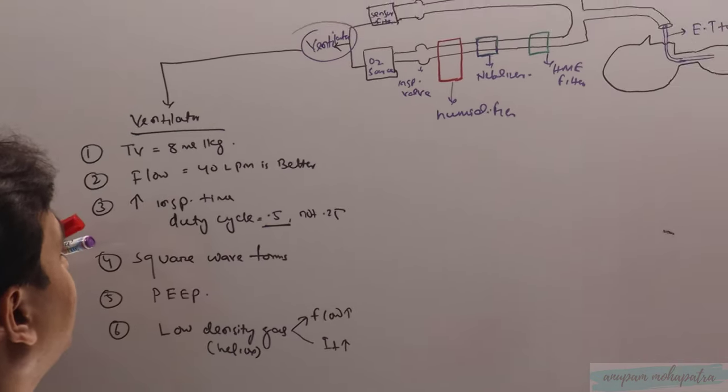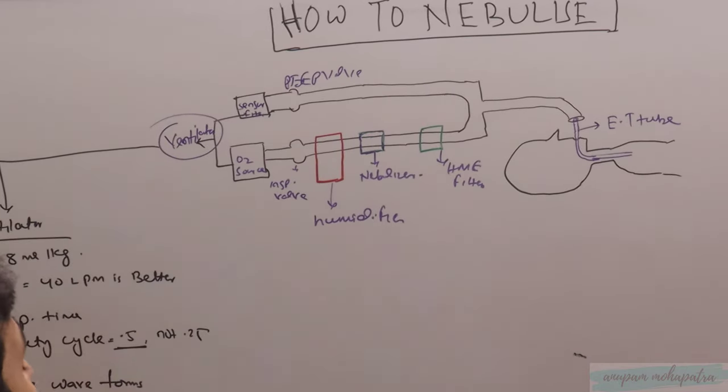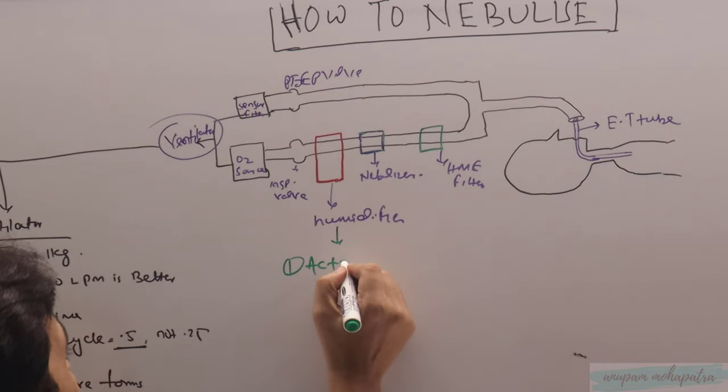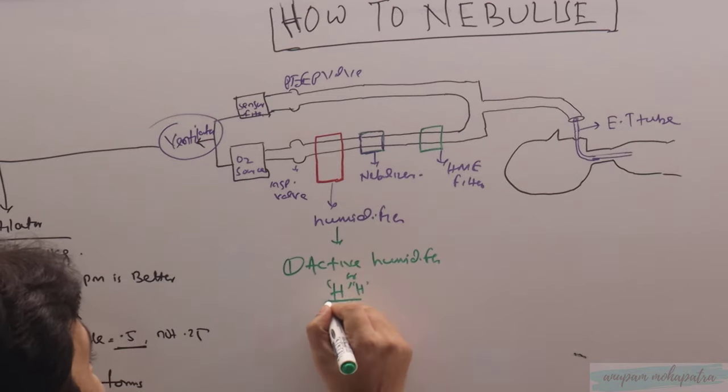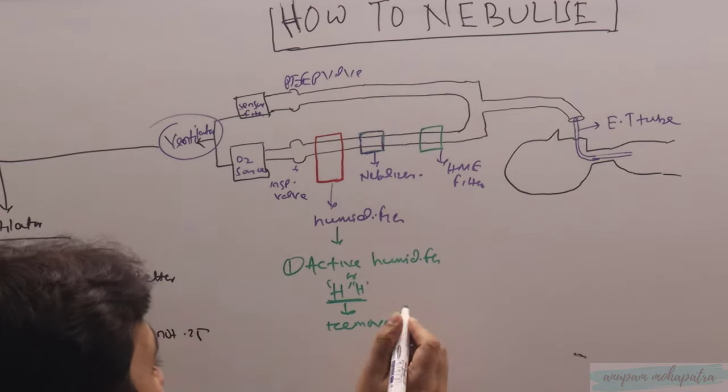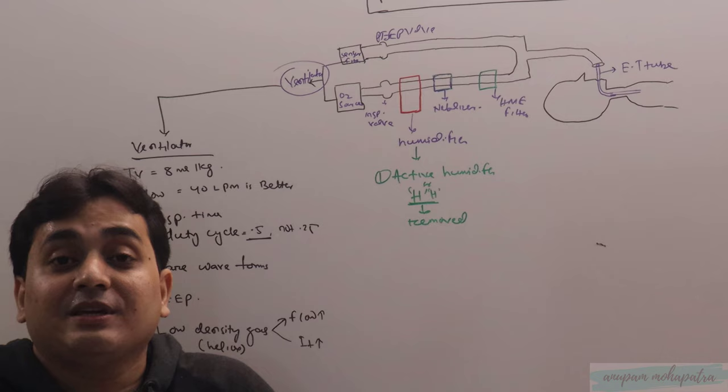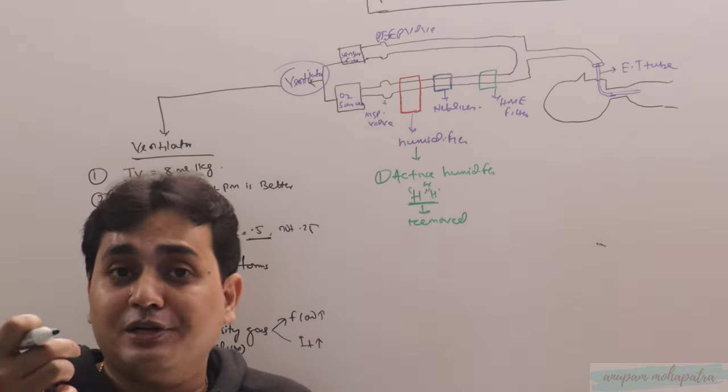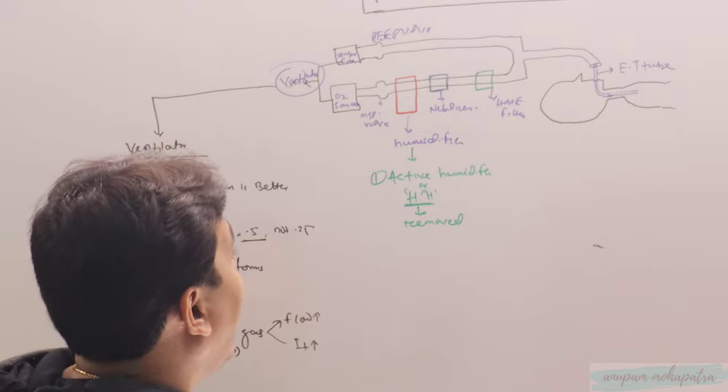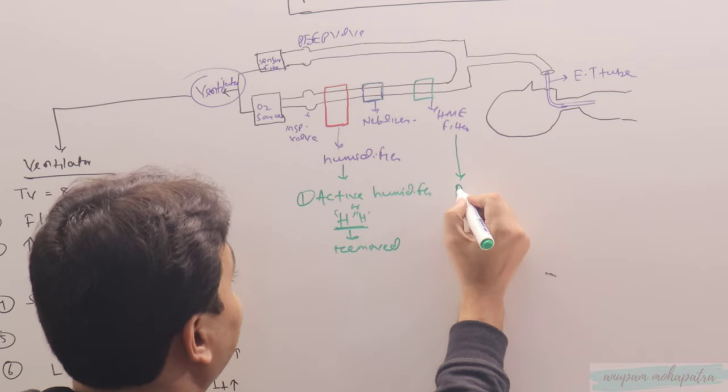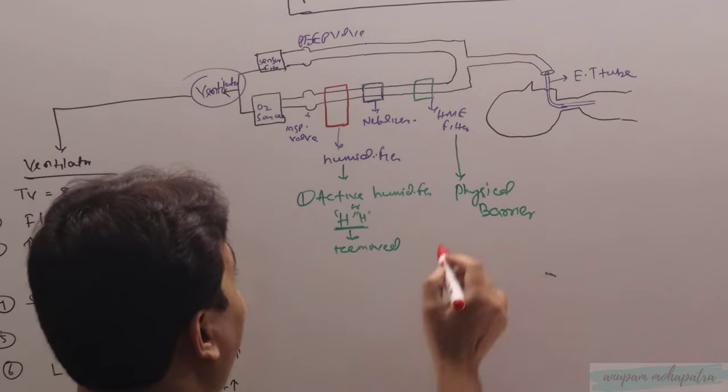Now coming to the humidifier. The active humidifier or heated humidifier has to be removed for that time period because of the hygroscopic nature of the humidifying device. The aerosol will become larger or bigger in size. The baffle will trap all these things, so overall delivery of the aerosol to the distal alveoli will be very less. So it has to be removed. And of course, the HME filter is a physical barrier, so it also has to be removed. Both humidifiers have to be removed - this is very important.